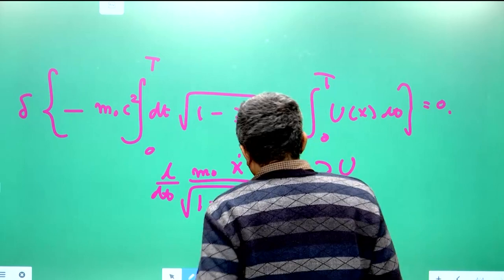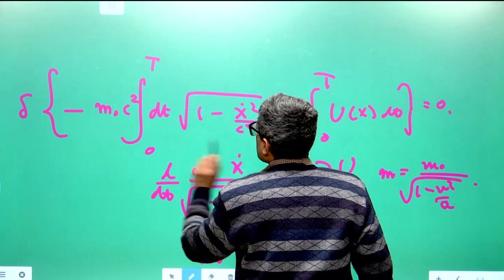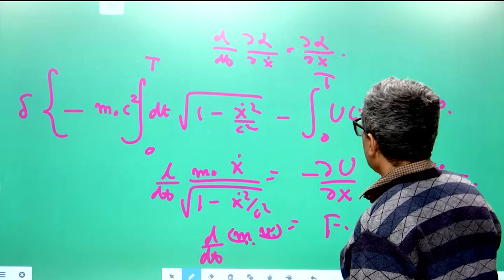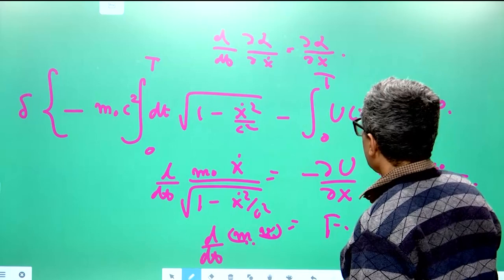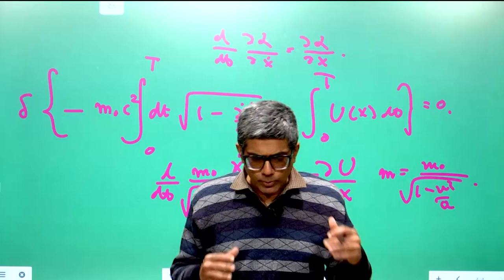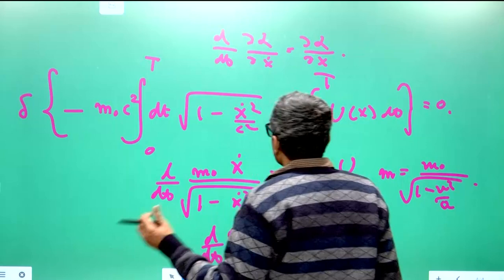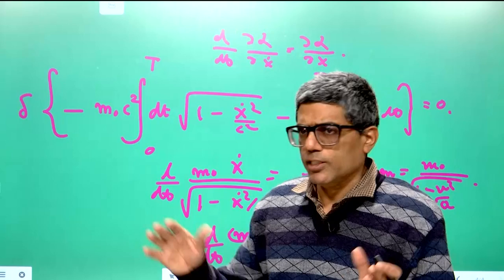This is Einstein's equation of motion in special relativity: d/dt of mass times velocity equals force, where the mass m = m₀/√(1 − v²/c²) increases with velocity. These are covariant with respect to transformations from one inertial frame to another. Einstein created the general theory of relativity to remove the restriction to inertial frame transformations, wanting equations of motion valid in all frames, including accelerated frames.